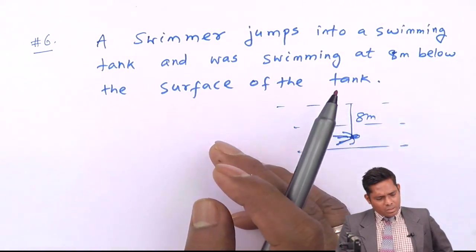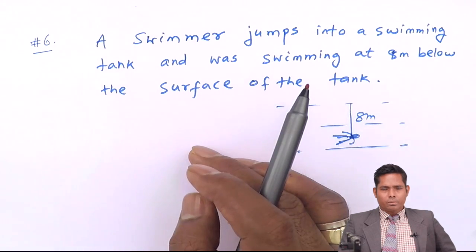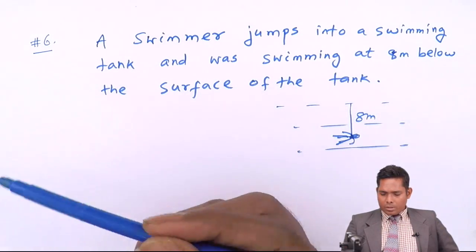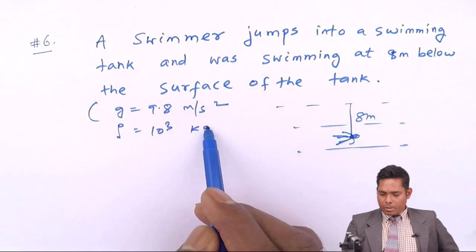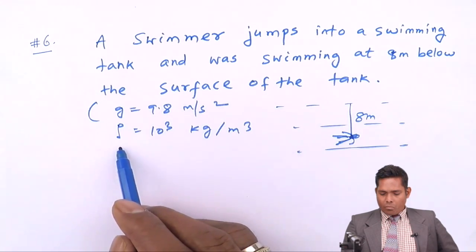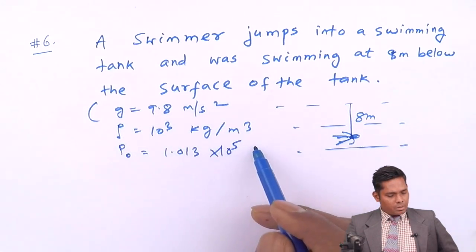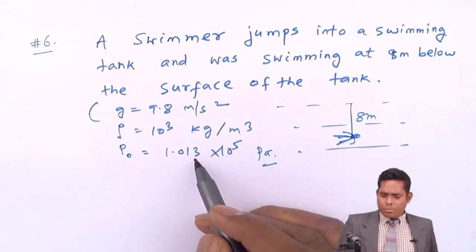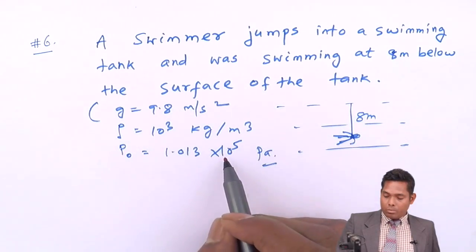What is given: density of water is 1000 kg per meter cube, g value is 9.8 meter per second square, and atmosphere pressure P0 is 1.013 × 10^5 Newton per meter square. For simplicity, I will approximate atmosphere pressure to be 10^5 Pascal.